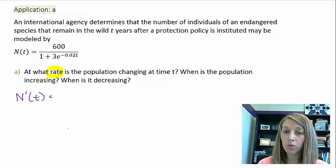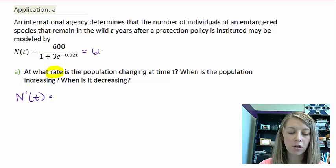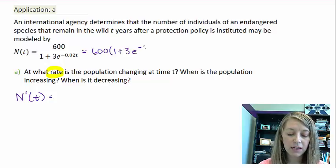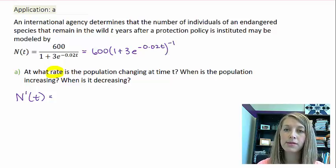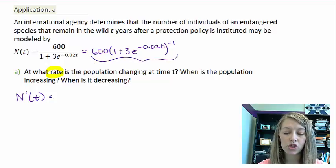You can use the quotient rule. Or since I just have a constant in the numerator, you might find it easier to convert it by using a negative exponent and then just having to do a chain rule, whatever you feel is more comfortable for you. I'm going to go ahead and do this chain rule here.